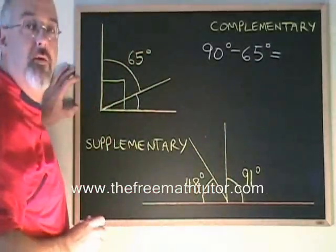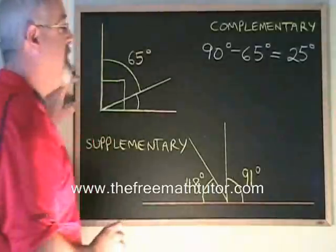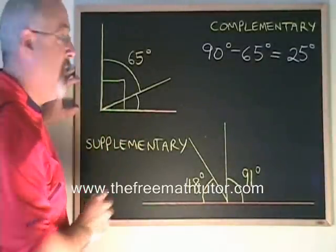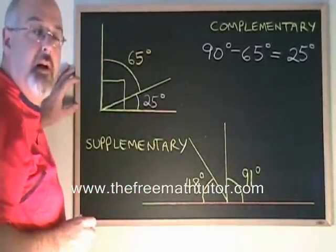The complementary rule says that if I do this, the answer has to be the measure of this small missing angle down here. I can label it and I have answered my question.